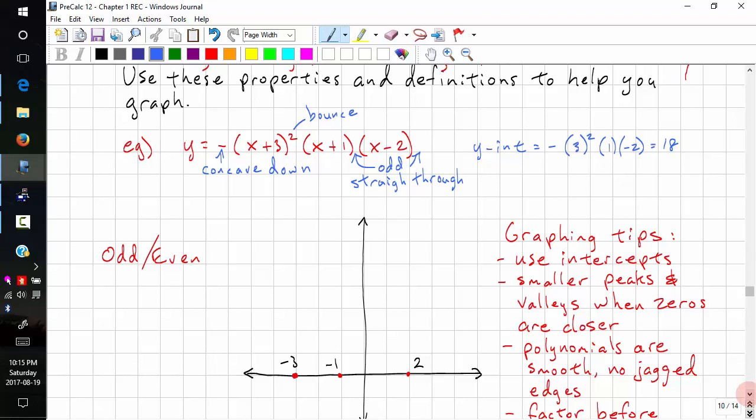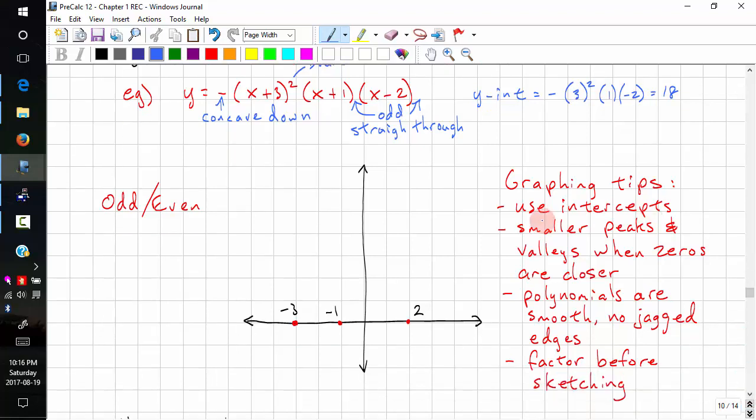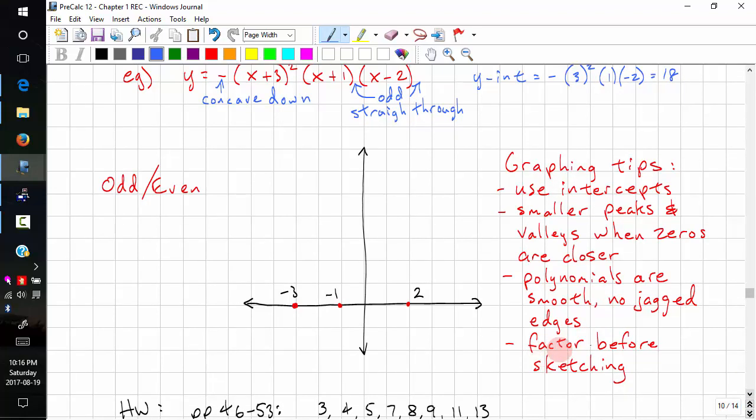So graphing tips. Use the intercepts. We have the intercepts and another intercept. Smaller peaks and valleys when the zeros are closer together. So these two are close, so the valley or peak should be smaller than this valley or peak. Polynomials are smooth, no jagged edges. And factor before sketching, this one's already factored.